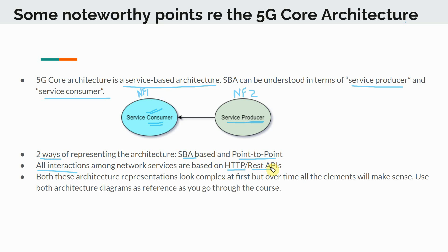Within the core, all network functions are connected to a common communication channel and can interact with each other using APIs. This is different from legacy systems where network functions interacted using strictly point-to-point interfaces and protocols. Both architecture representations look complex at first, but over time all the elements will make more sense. I strongly advise that you use both architecture diagrams as a reference as you go through the course, and if you have any doubts, please feel free to pause and listen to the videos again.